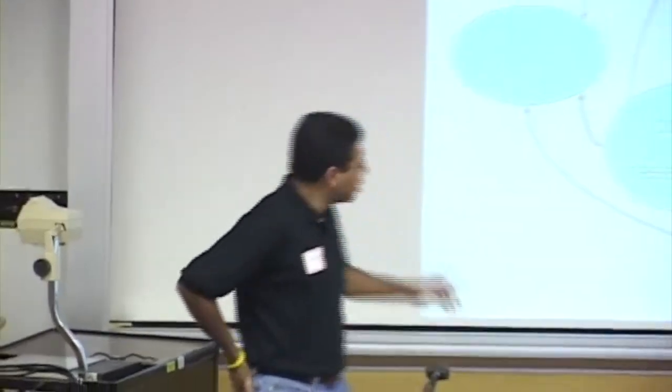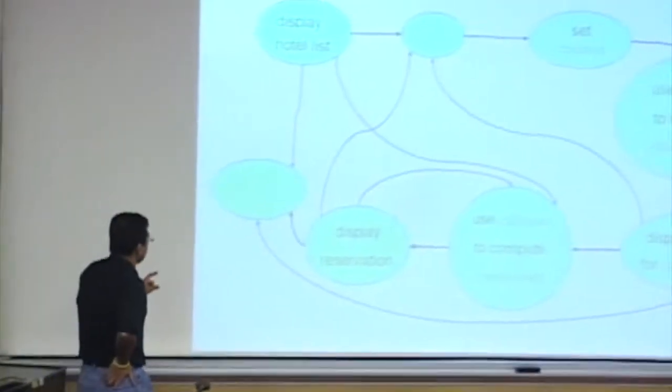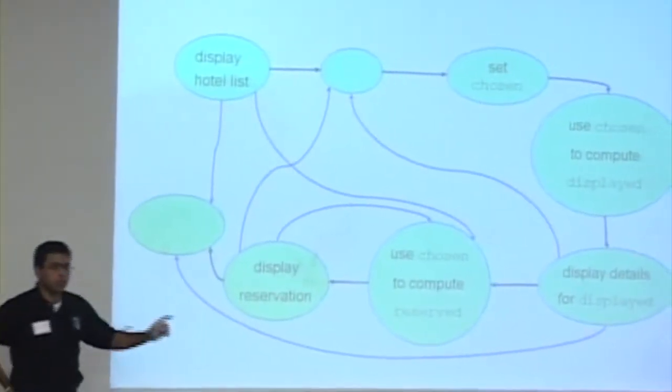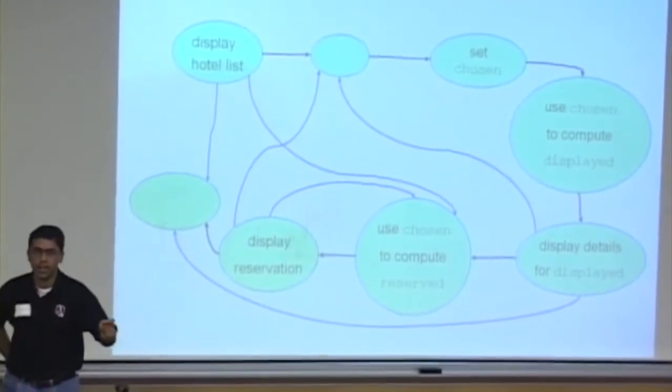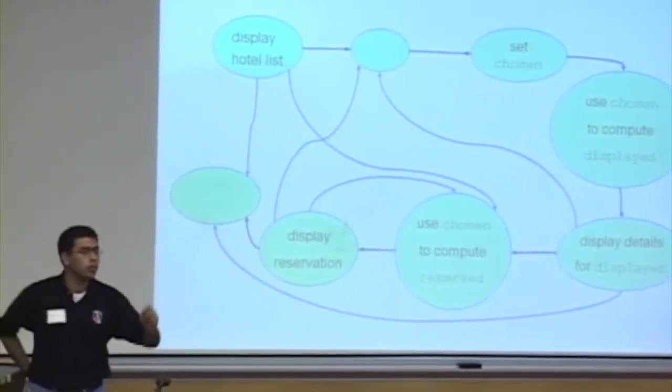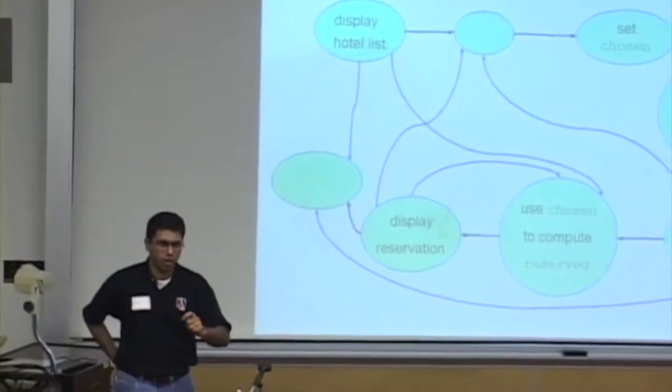So, this is the Orbitz web control flow graph and we take this Orbitz control flow graph, we verify this against the property and sure enough it comes back and reports the violation that we expected. Right?